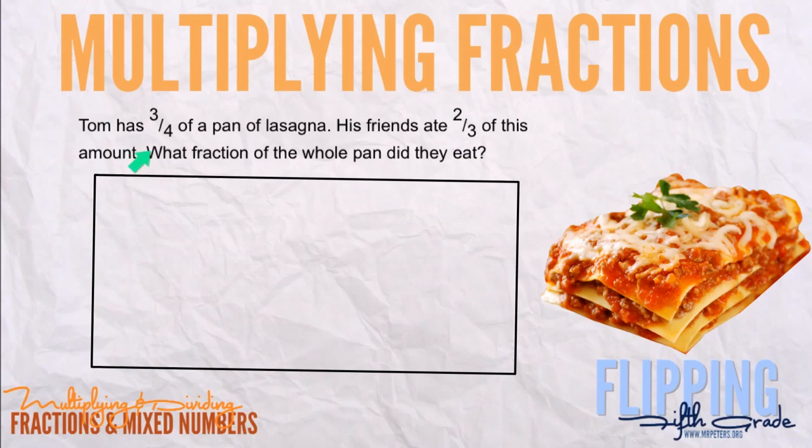To do this, I'm going to show you a method. We're going to use the denominators to split up this box. First, I'm going to split this up into roughly four equal parts. It doesn't have to be perfect. The other denominator is three, so I'm going to split it into three equal parts.